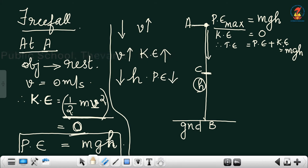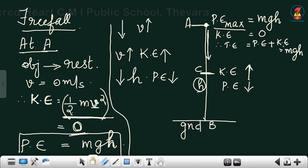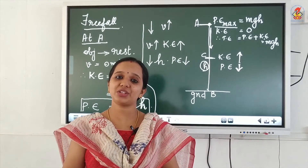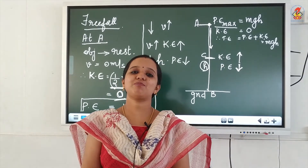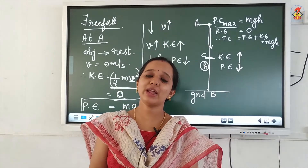At a midpoint C, as the body descends, its velocity increases so kinetic energy increases, and as height decreases, potential energy decreases. This increasing kinetic energy and decreasing potential energy balance each other, keeping the total energy the same.